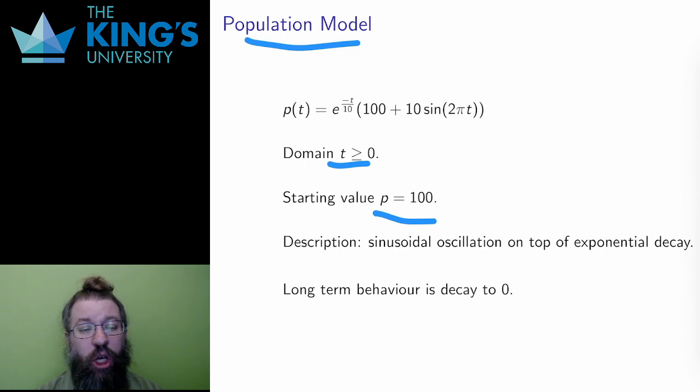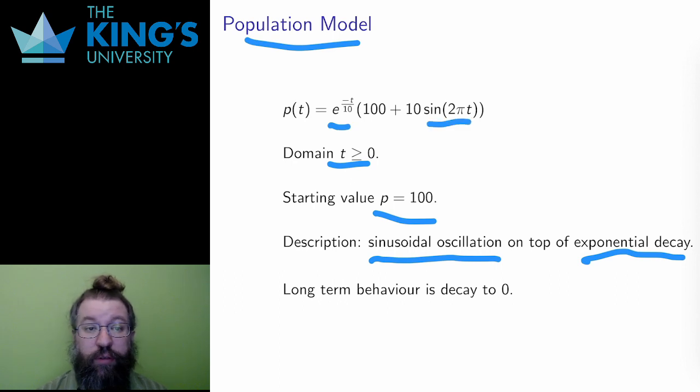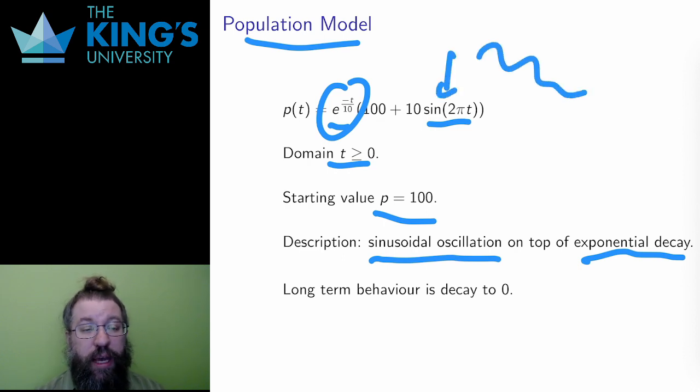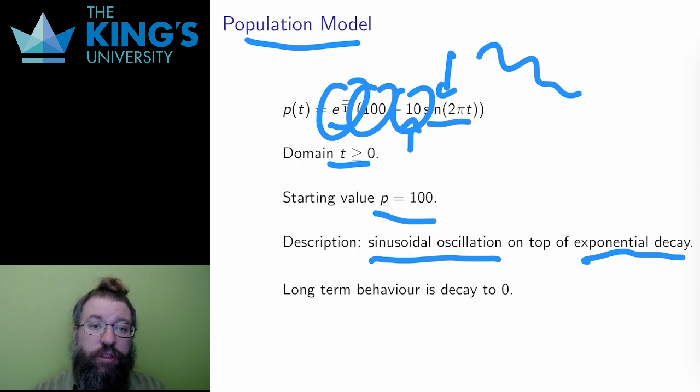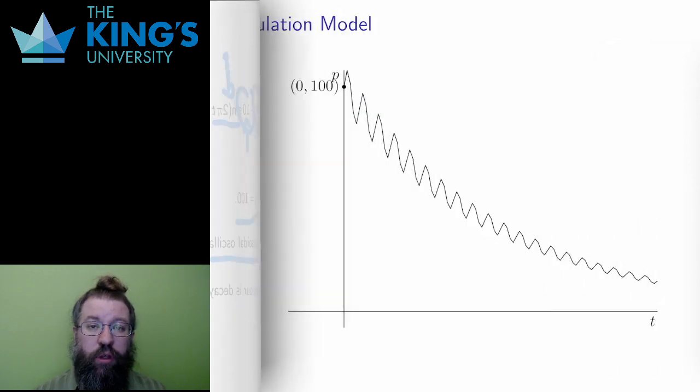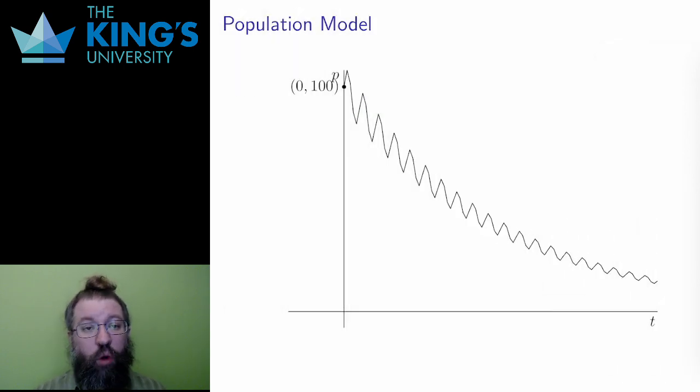What is the behavior? Well, the function has two pieces, exponential decay and sinusoidal oscillation. The long-term behavior is decay to 0, but as this decay happens, there is variation. The amplitude of the sine term is 10, again. So the variation is minimal compared with the starting value of 100, but still quite noticeable. Here is a rough graph of this behavior. You can see the decay as the overwhelming behavior, and the oscillation as the more minor behavior on top of that.